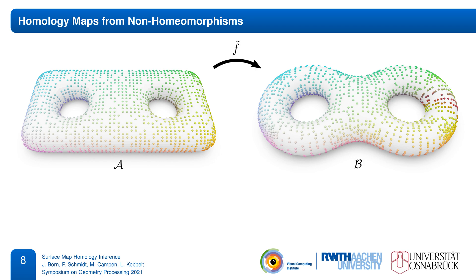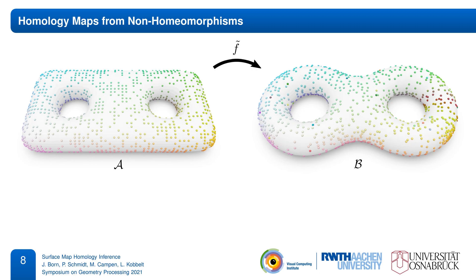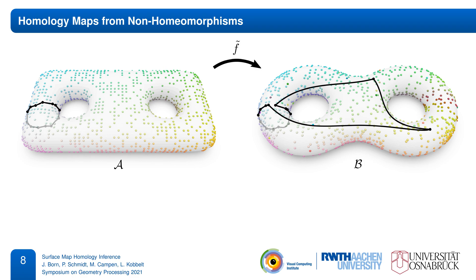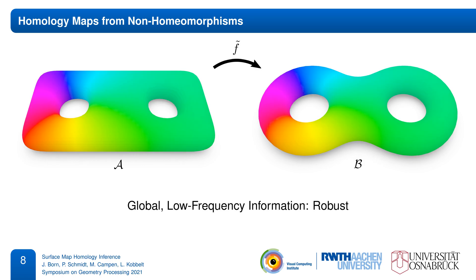We could try to approximate the transfer of cycles by mapping certain points and connecting them somehow, but this can be quite unreliable. If the map is unevenly sampled or contains outliers, this mapping is susceptible to local defects and may easily fail due to a bad choice of representative cycles. Instead of trying to map local, high-frequency information in the form of cycles, we propose an alternative approach involving smooth, low-frequency fields that can be globally mapped and compared, in a way that is tolerant to local errors.